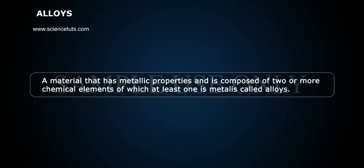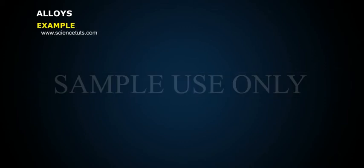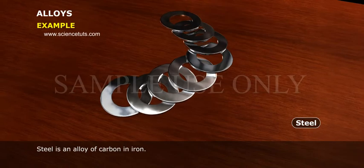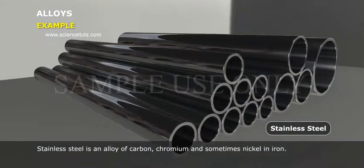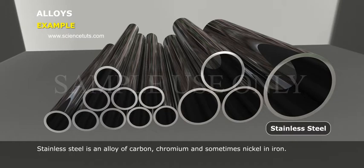Alloys. A material that has metallic properties and is composed of two or more chemical elements, of which at least one is metal, is called an alloy. For example, steel is an alloy of carbon in iron, and stainless steel is an alloy of carbon, chromium, and sometimes nickel in iron.